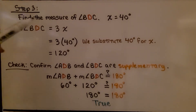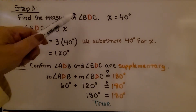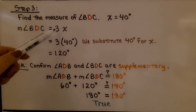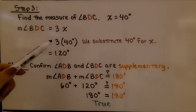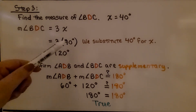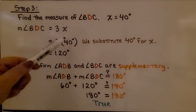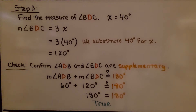We find the measure of angle BDC — we know it's equal to 3x. We substitute 40 degrees for x and get 3 times 40 degrees, which is 120 degrees.